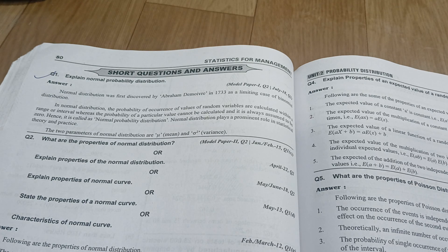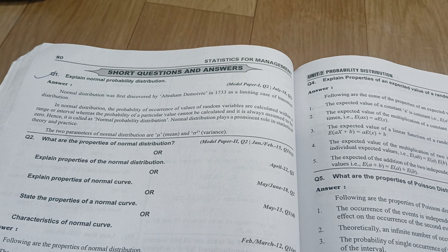According to Abraham in 1733, the probability distribution helps to understand the assumed value within intervals and ranges.